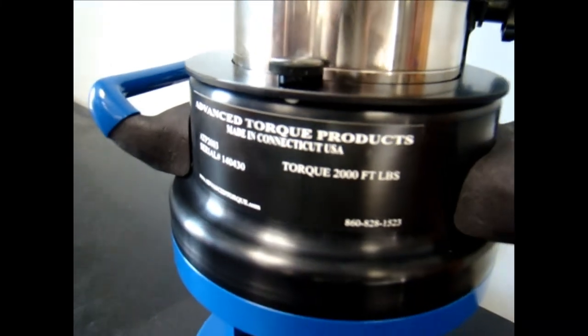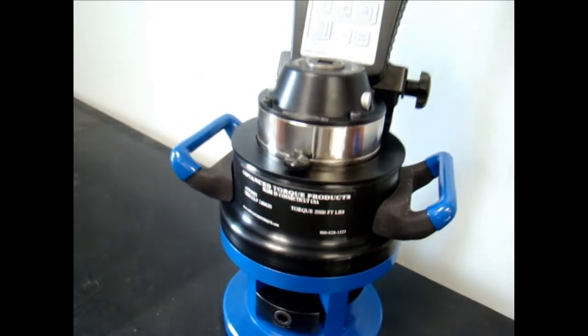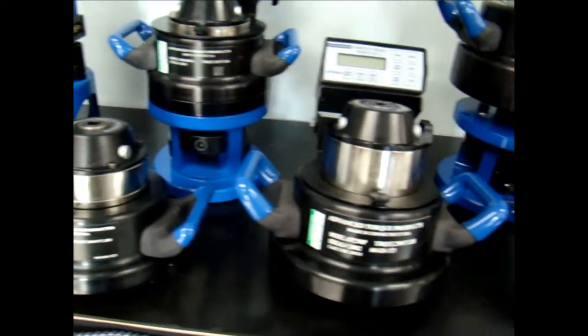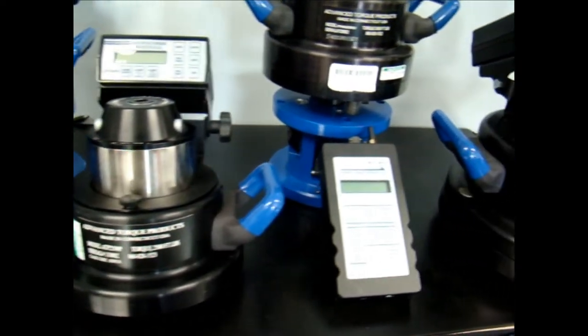The ATP Digital Torque Multiplier is an ergonomic, easy to use tool designed to make light work of high torque applications. Its accuracy and dependability are second to none in the torque industry.